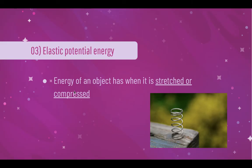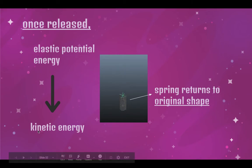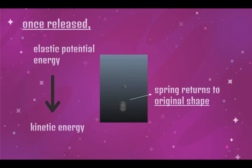The last potential energy we will be looking at is elastic potential energy — the energy of an object when it is stretched or compressed. Once the elastic object is released, the elastic potential energy will be converted to kinetic energy. As you can see in this diagram, when it is released, it actually moves back to its original shape, and because it moves, it is a form of kinetic energy.